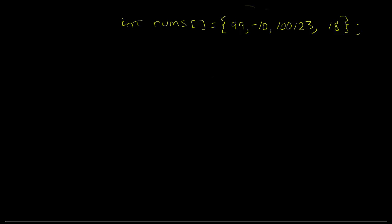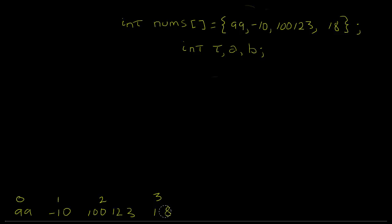We're also going to find it useful to have a couple of variables. So let's make some of them: T, A and B. Let's make a copy of our array down here in the left-hand corner: 99, negative 10, 100123, 18. And let's mark off for reference the indices: 0, 1, 2, 3. What we want to do with bubble sort is we want to take the items in our array and put them in ascending order from lowest value to highest value.